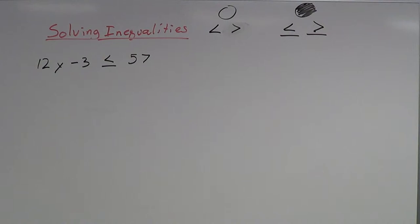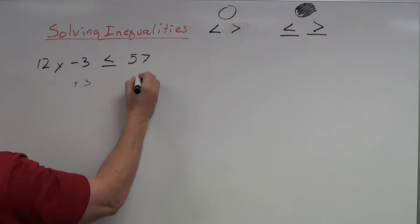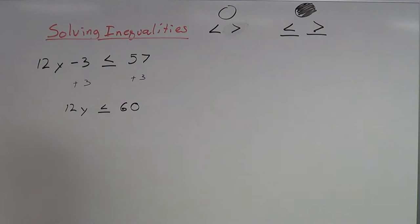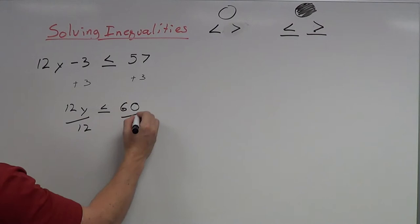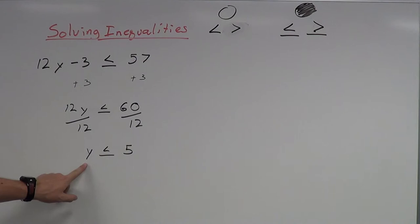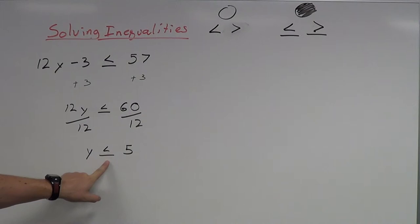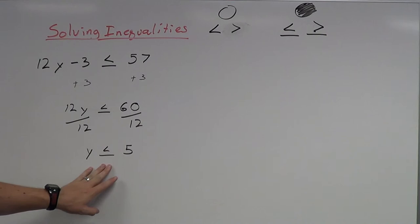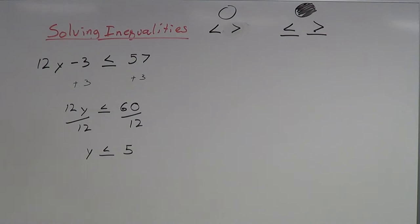I solve these just like normal equations. I'm going to add 3 to both sides, so 12y is less than or equal to 60. Now I'm going to divide by 12, which means y is less than or equal to 5. So all the solutions that work here are going to be less than or equal to 5. So 1, 2, 3, 4, and 5 are all going to work. But 6 is too big — that's not going to work.